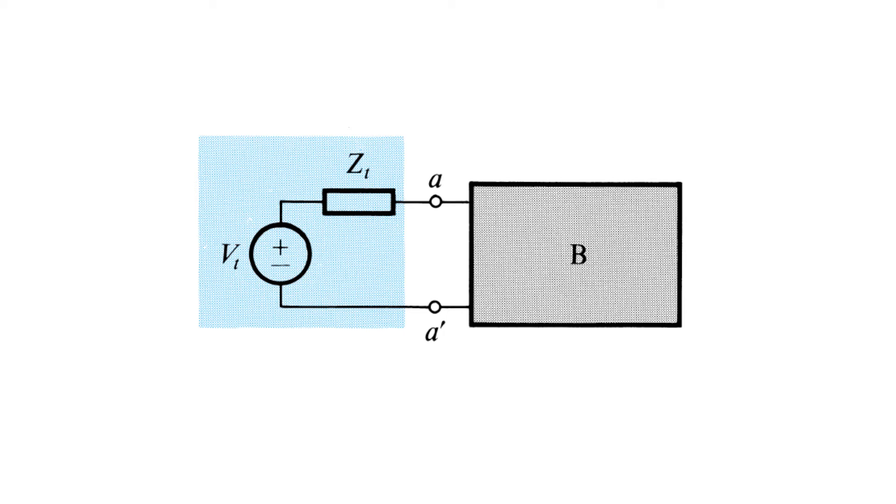Obviously, we've simplified the network A considerably in this model. We've no longer got any of its internal nodes or current, but the analysis of the overall circuit is exactly the same as we had before.